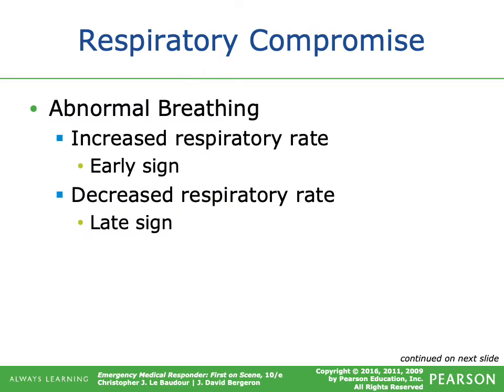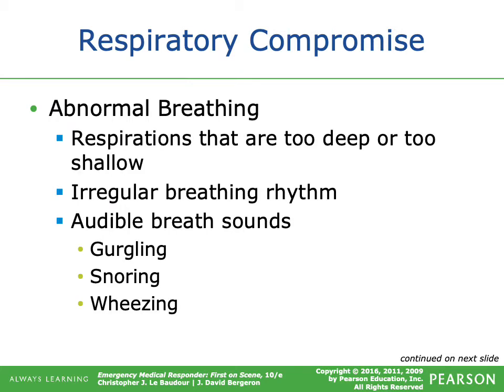In early abnormal breathing, you'll see an increased respiratory rate as the body compensates. Later, a decreased respiratory rate signals they're moving into respiratory failure — their compensatory mechanisms are fatiguing and they can't continue. You may also see respirations that are too deep or too shallow, and an irregular breathing rhythm, which is generally a problem often related to something wrong with the brain.